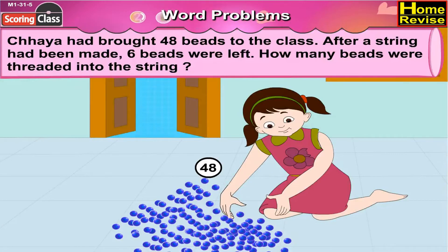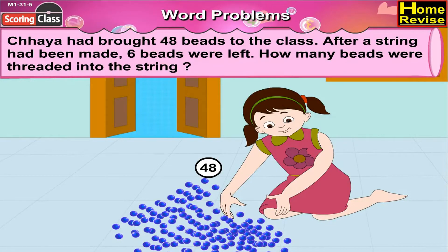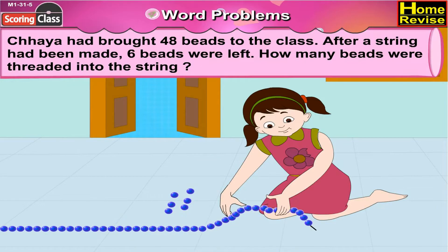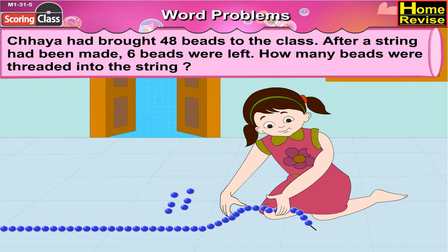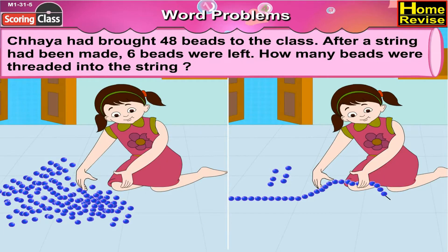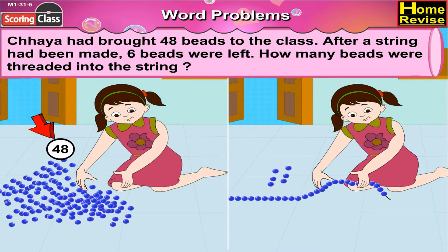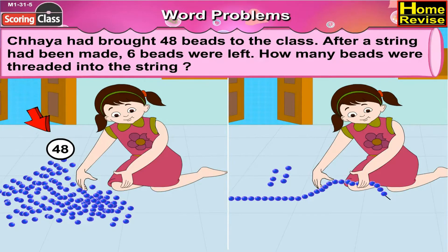Chaya had brought 48 beads to the class. After a string had been made, 6 beads were left. How many beads were threaded into the string? The number of beads Chaya brought to the class are 48. The number of beads left was 6.